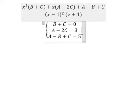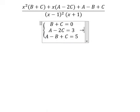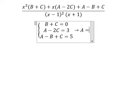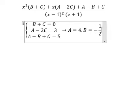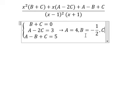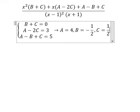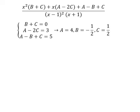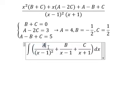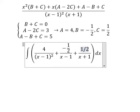Now we need to find the solution of A, B, C. So A equals 4, B equals negative 1 over 2, and C equals 1 over 2. Now I will put A, B, C back in here. A equals 4, B equals negative 1 over 2, C equals 1 over 2.